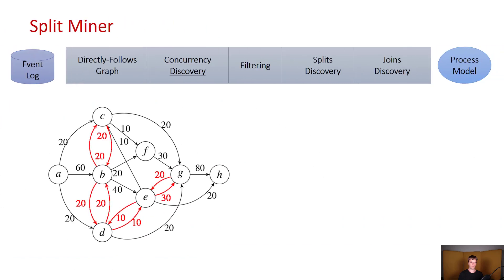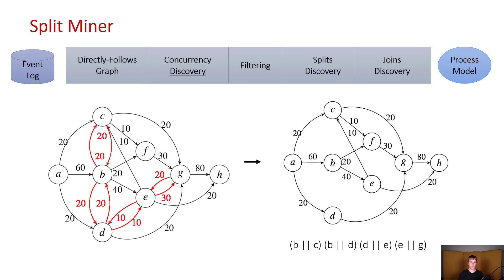After the directly follows graph has been discovered, the split miner proceeds into discovery of concurrency. Here it looks at the back and forth arcs between the different activities in the directly follows graph. Those arcs will be removed from the graph, however the relations themselves will be saved as a separate set.